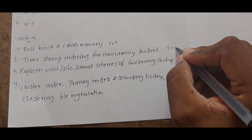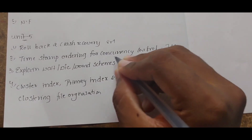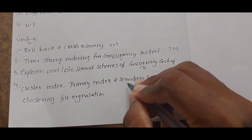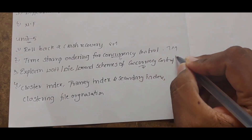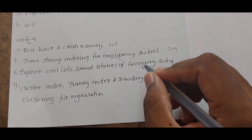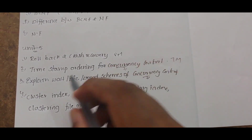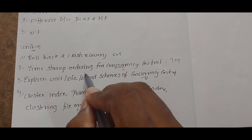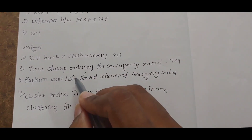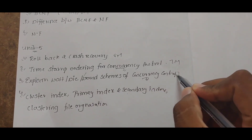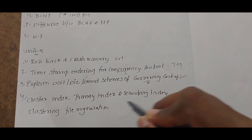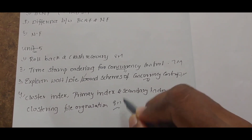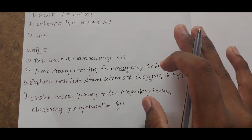Timestamp ordering for concurrency control is important — it is a real key for 5 marks. Explain wait-die and wound-wait schemes — these are rare but important questions for 5 marks. Also, primary indexing and secondary indexing are important topics in this unit.